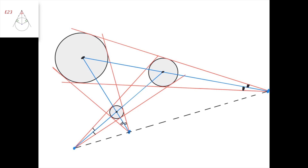Suppose this and this are the centers of these two circles. Then if we take the angle bisector of this angle here, it would pass through both centers, because we have a tangent line here and a tangent line here. Similarly, this point and this center of this circle lie on the angle bisector of this angle here, as denoted on the picture, and this point and this point lie on the angle bisector of this angle here.